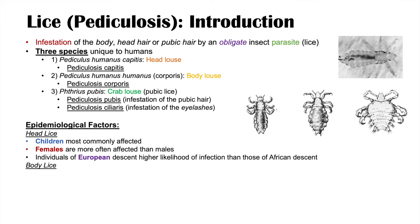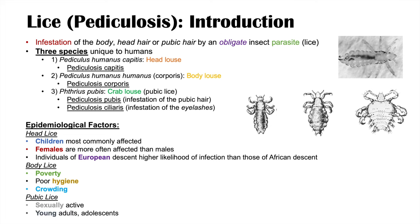With regards to body lice, risk factors include poverty, poor hygiene, and crowding — as seen in homeless populations. These factors together can increase transmission of body lice. With regards to pubic lice, risk factors include being sexually active, which is why young adults and adolescents are more commonly affected.